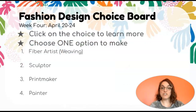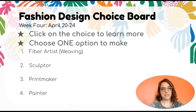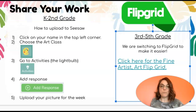Now you're going to choose between one of these four options. You only need to do one. Here are the options right over there: fiber art — being a fiber artist — and we're going to be giving the option of weaving for that one. You can become a sculptor, a printmaker, or a painter. Those are four options for you to become a fine artist this week. Once you create something, you'll be sharing it with the rest of the class or myself using Seesaw if you are in kindergarten through second grade, or Flipgrid if you are in third through fifth.